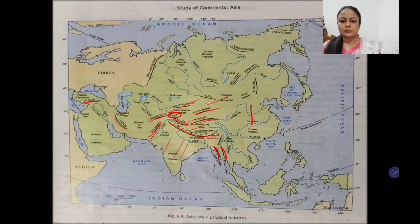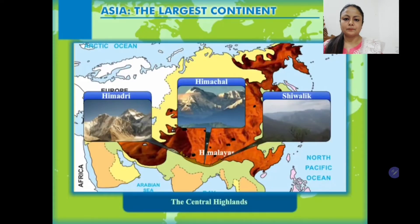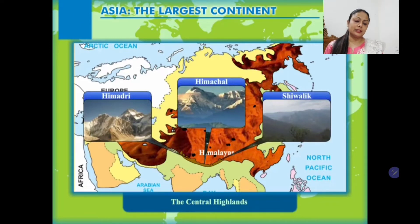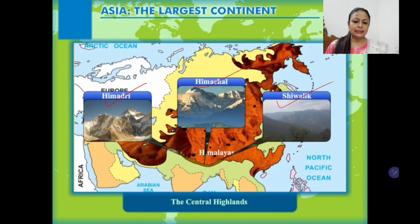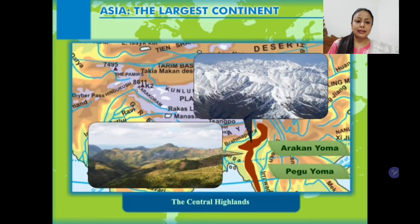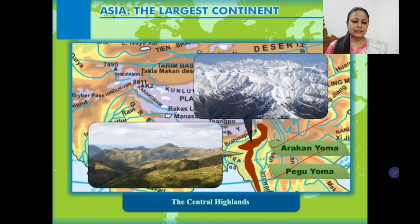The Himalayas occupy the northern part of India and other countries like Nepal. They occur in three parallel ranges: the highest range is Himadri, the middle Himalayas are called Himachal, and the lower Himalayas are called Shivalik. The Himalayas further extend into Myanmar, where they are known as Arakan Yoma and Pegu Yoma.